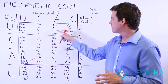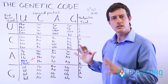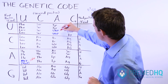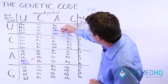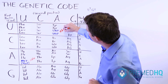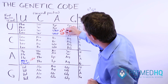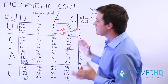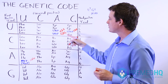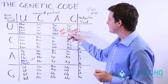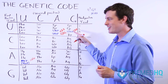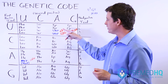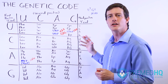The other codons you need to know are the three stop codons, which signal stop. Those stop codons are UAA, UAG, and UGA. There's a mnemonic people like to use: 'you are annoying, you go away, you are gone' — UAA, UGA, UAG. That's a good way to recognize these stop codons when they come up.